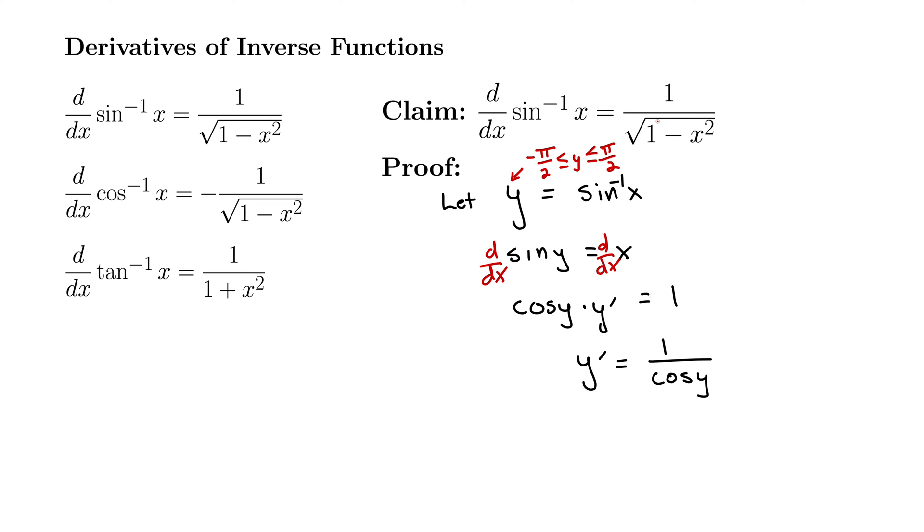So we're getting closer. We have cos y, but we want square root of 1 minus x squared. Well, let's remember the Pythagorean identity, which tells us that cos squared y plus sine squared y equals 1. So we can solve this for cos y then is square root of 1 minus sine squared y.